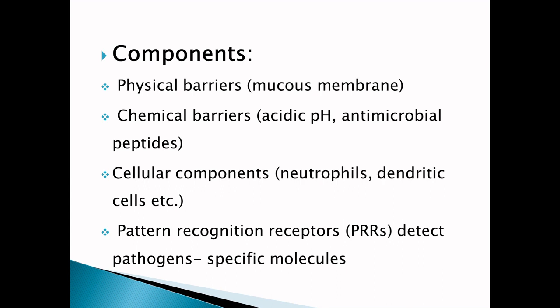Physical barriers do not allow microorganisms to penetrate into the body. The respiratory tract, gastrointestinal tract, and genitourinary tract are all lined by mucous membranes to trap invading microorganisms. The mucosal surface produces many antimicrobial proteins which act as natural antibiotics to prevent the entry of the pathogen. Chemical barriers include acidic pH — body secretions like sweat, sebaceous secretions, and the acidic pH of the stomach.